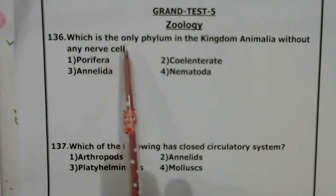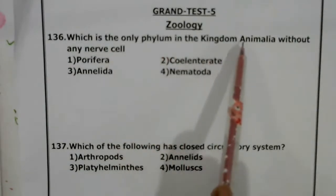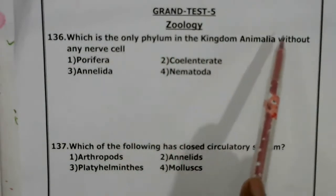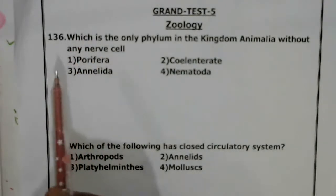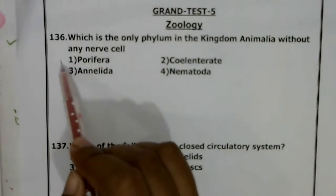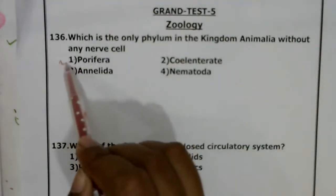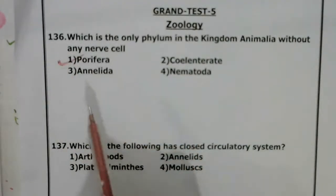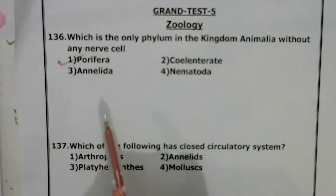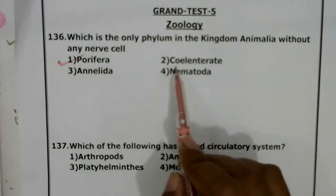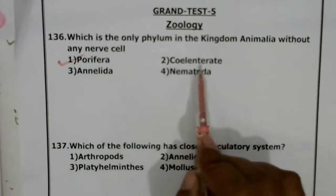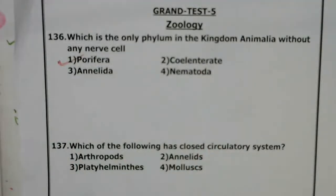Which is the only phylum in animal kingdom without any nerve cell? The answer will be phylum Porifera. Porifera does not have any nerve cell — it lacks nerve cells. But in coelenterates, the nerve cells will be present.